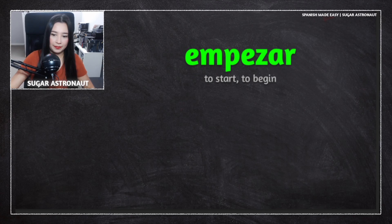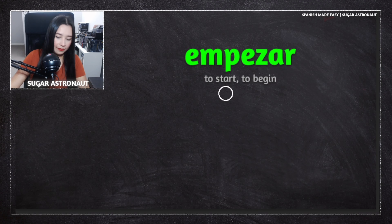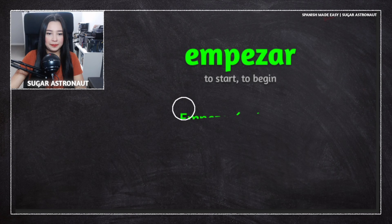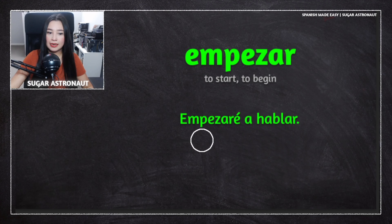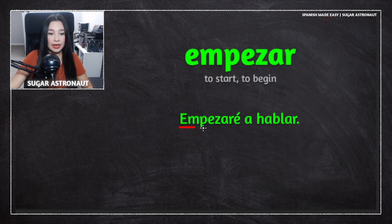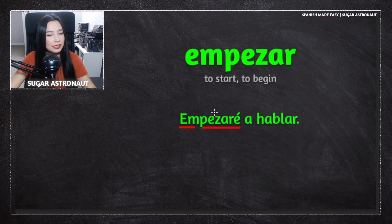Let's look at some examples using the verb empezar. You can see empezar right here. We don't need 'yo' but you can include it — yo means 'I'. Now, empezar a — that sounds like future tense. The word 'a' is used with this verb very often.